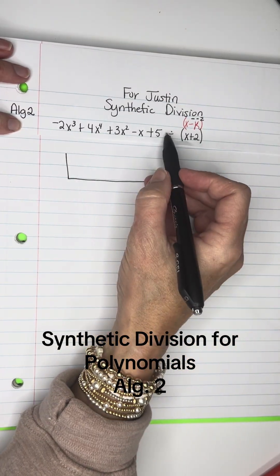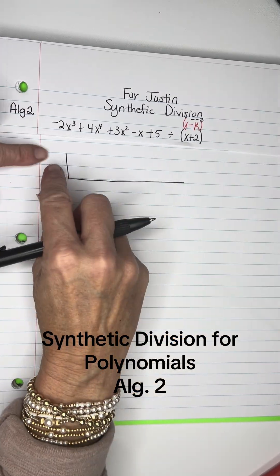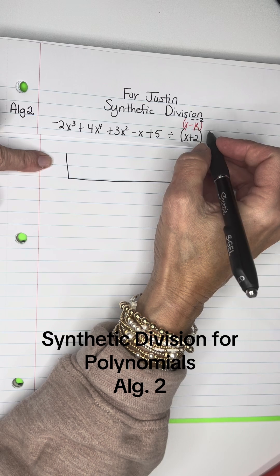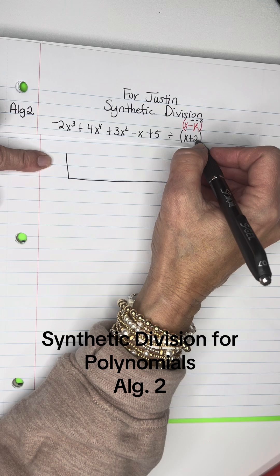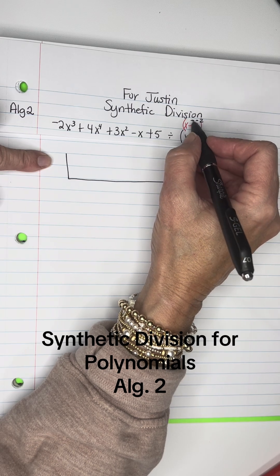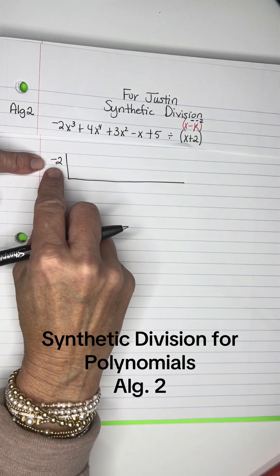So I've got this polynomial, I'm dividing it by X plus 2. In order to know what to put here in synthetic division, it's going to be X minus K, so if this says plus 2, the only way it became a plus 2 is if it started out minus a negative 2.